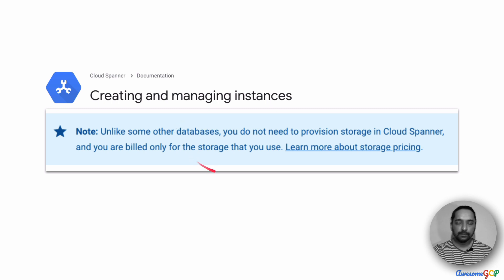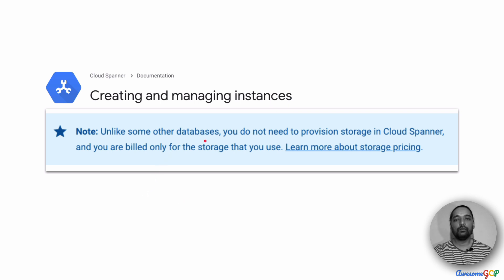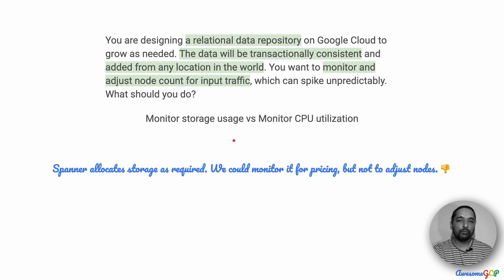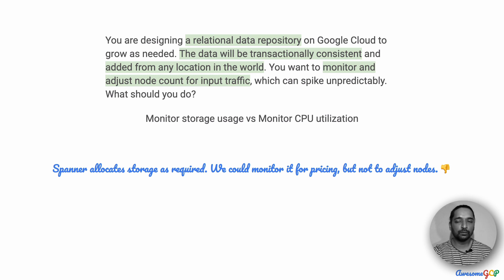Looking at the documentation, it says clearly that unlike other databases, you do not provision storage for Cloud Spanner. You are billed based on the storage that you use, but the storage is automatically allocated for you. Therefore, storage is not something that you monitor and need to change. You could monitor it for pricing — to see how much data is being stored or backed up — but you do not adjust nodes to increase the amount of storage for Cloud Spanner.